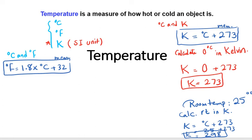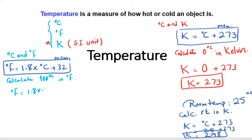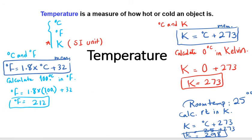Let's use this equation with an example: calculate 100 degrees Celsius in degrees Fahrenheit. You say °F = 1.8 × 100 + 32. If you calculate that, degrees Fahrenheit equals 212. So 100°C converts to 212°F.